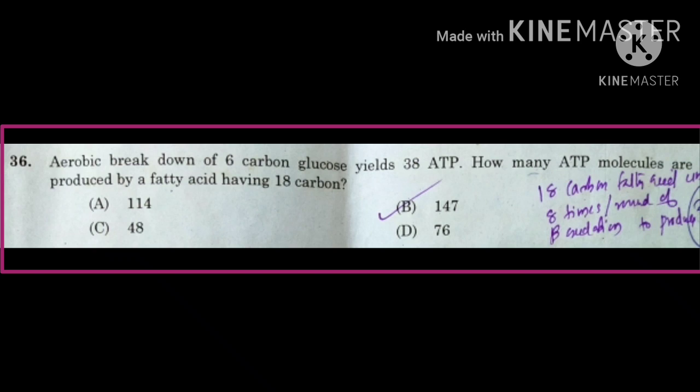The process of breakdown of fatty acid is known as beta oxidation of fatty acid. Beta oxidation mainly takes place in the mitochondrial matrix, but the activation of fatty acid takes place in the cytoplasm or cytosol.